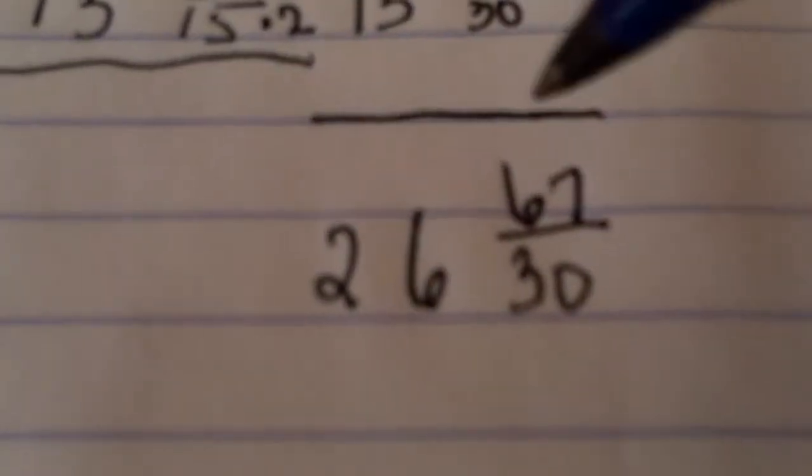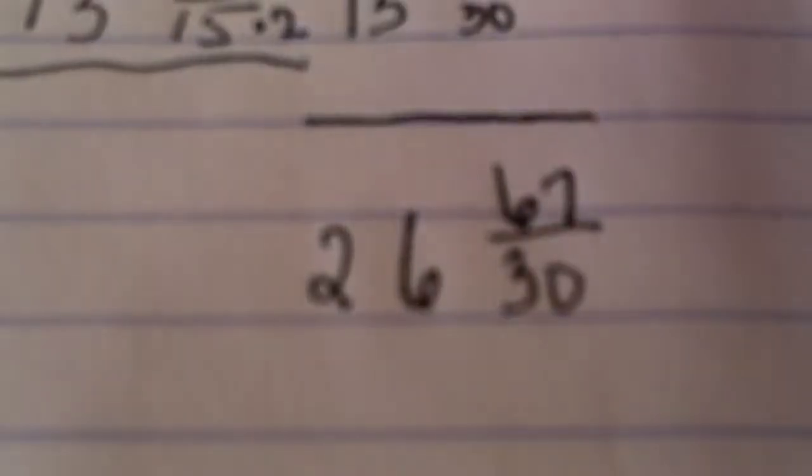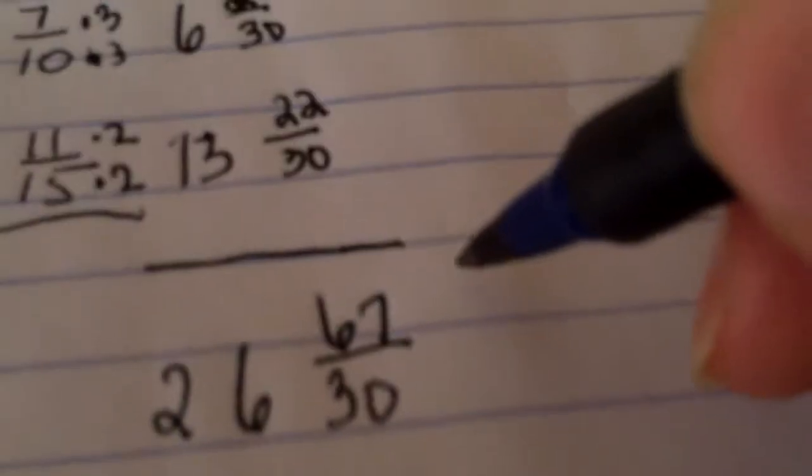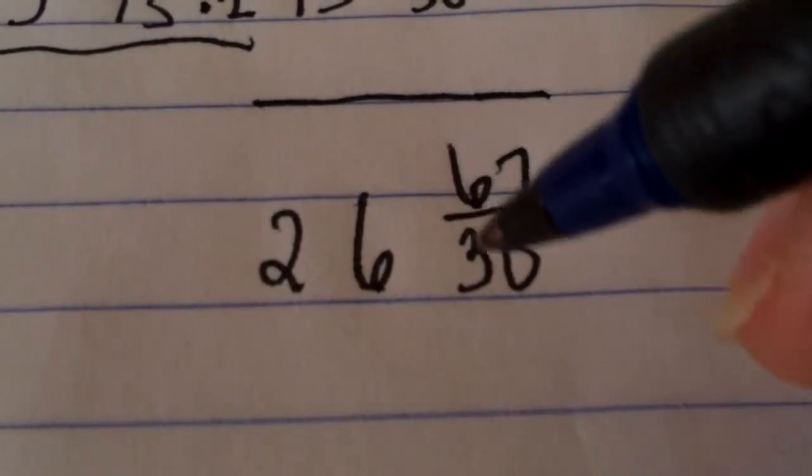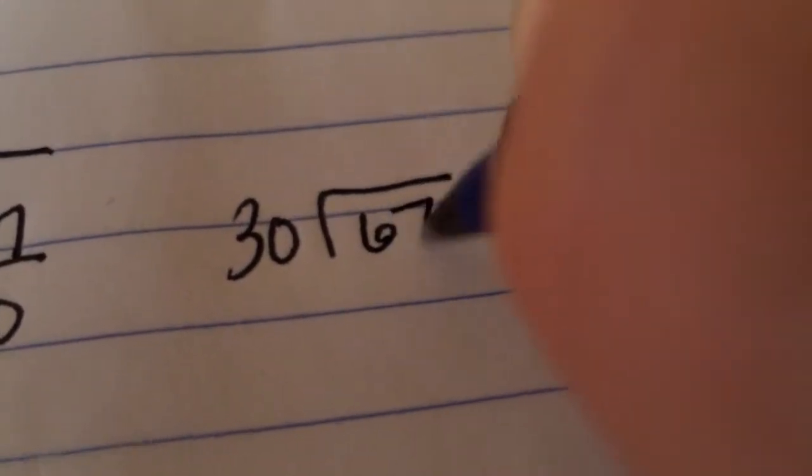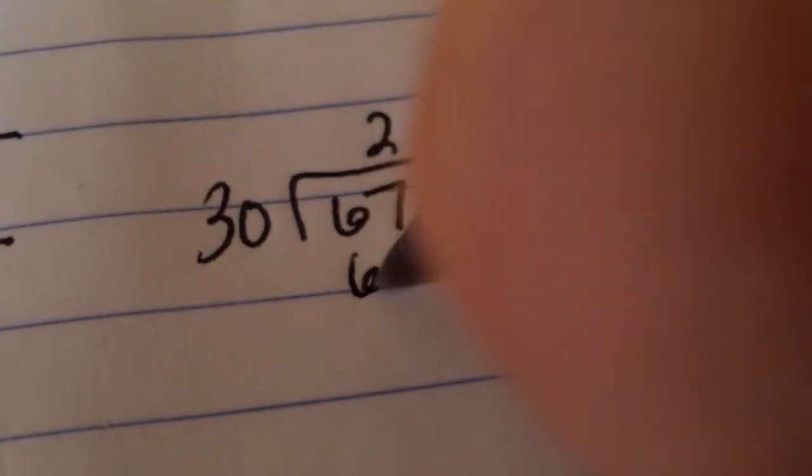Common error, people are like, oh, done, circle it. No, you're not done. You want to go and clean this up. You cannot have this guy overflowing. So you're going to have to just pretend as if, what would happen if you had the 67 thirtieths just by itself?